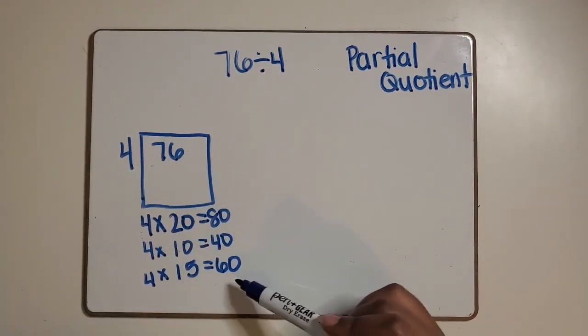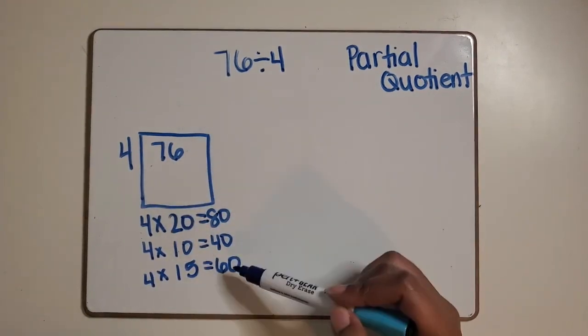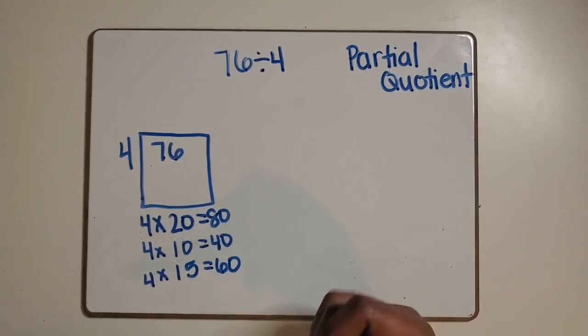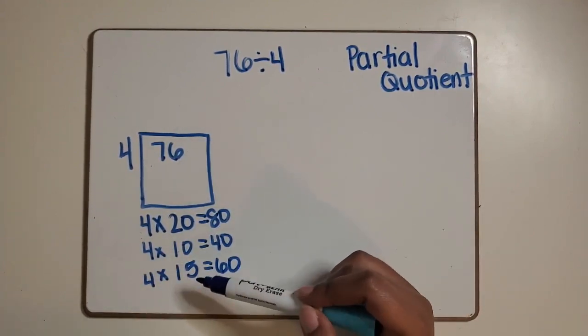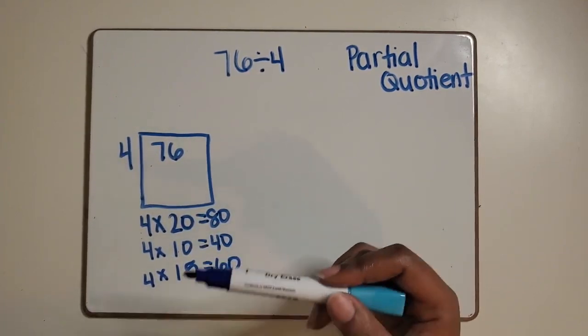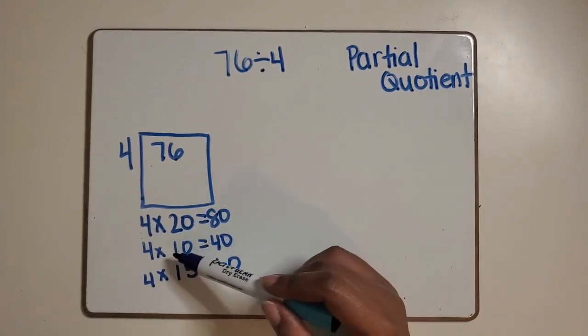Four times 10 equaling 40 will get them less than 76, but four times 15 equaling 60 will get them closer to that 76. It will get them closer than the 40. So in this example we will start with the equation four times 15 equals 60.